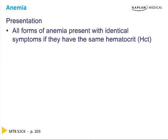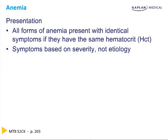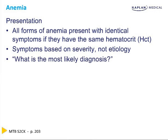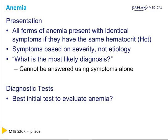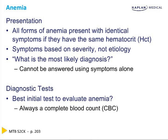All forms of anemia present with identical symptoms if they have the same hematocrit. It's not the etiology, it's based on the severity. The symptoms are based on the severity of the anemia, not the etiology of that anemia. So the answer to the question of what is the most likely diagnosis simply cannot be answered based on the symptoms alone. You need diagnostic tests, and the best initial test to evaluate anemia is always the CBC, the complete blood count.